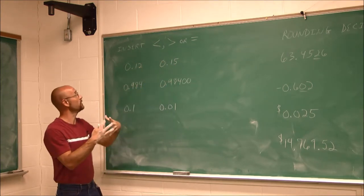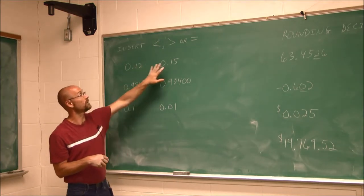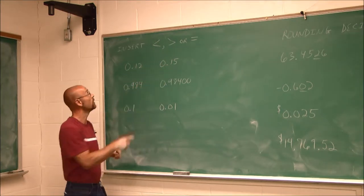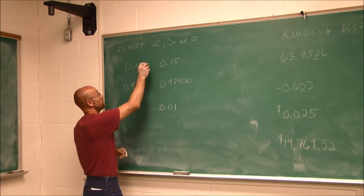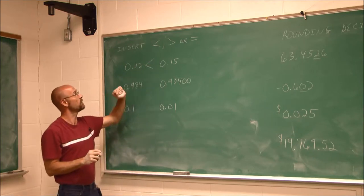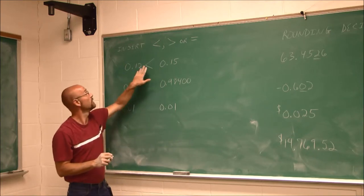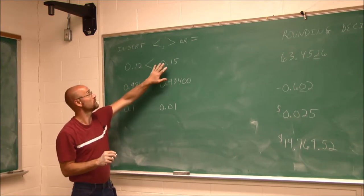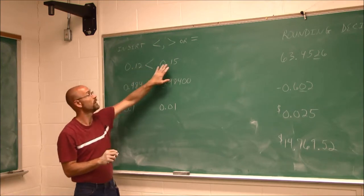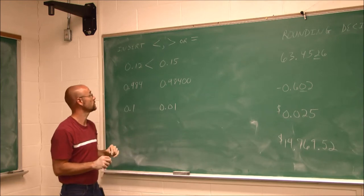12 hundredths is less than 15 hundredths. If we relate this to cents — if I have 12 cents or I have 15 cents — 12 cents is less than 15 cents. The symbol always points to the smaller one and opens toward the bigger. So 12 one-hundredths is less than 15 one-hundredths.